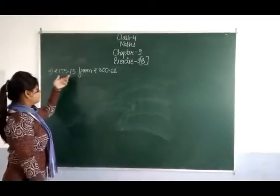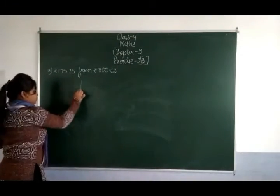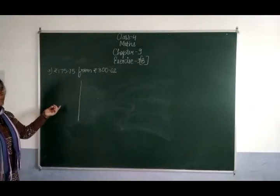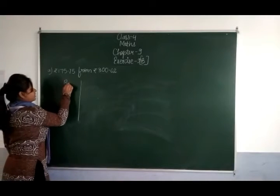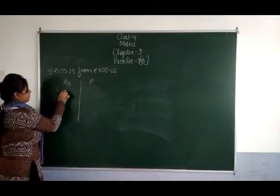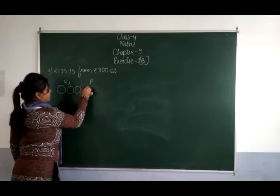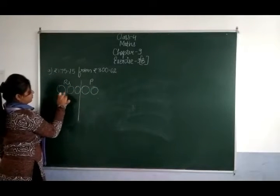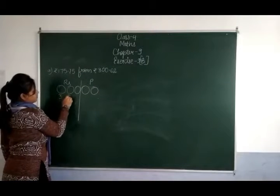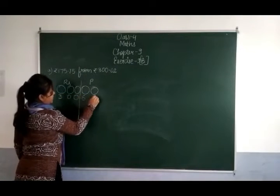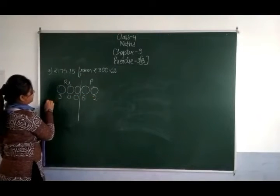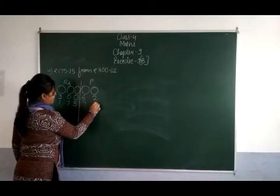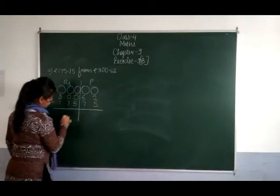तो पहले यह लिखेंगे, फिर उसके बाद यह लिखेंगे। जैसे हमने addition किये थे उसी तरीके से लिखना है। रूपीज — पैसे: 300 रूपीज, 62 पैसे। Minus 175 रूपीज 75 पैसे। ठीक है?